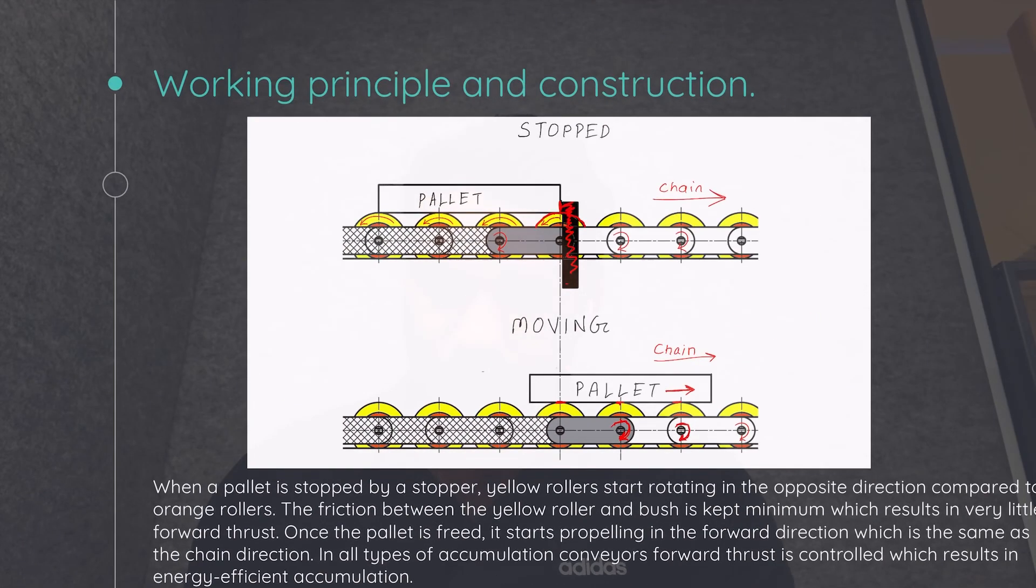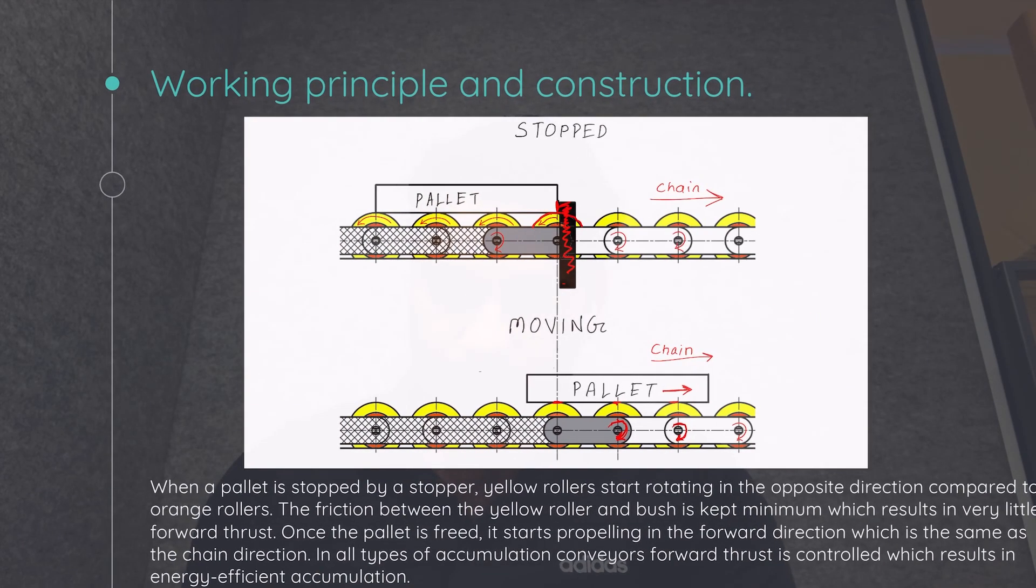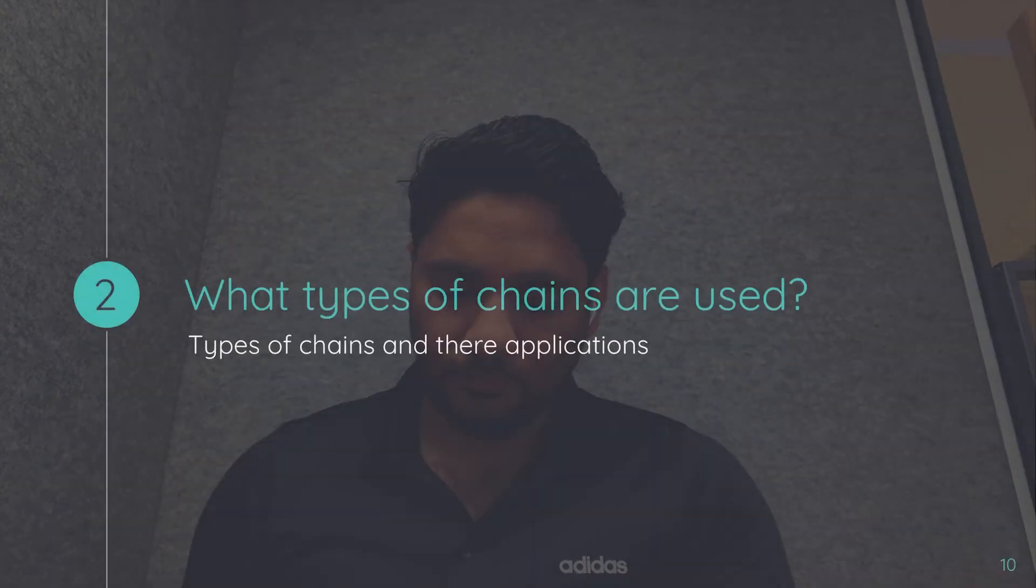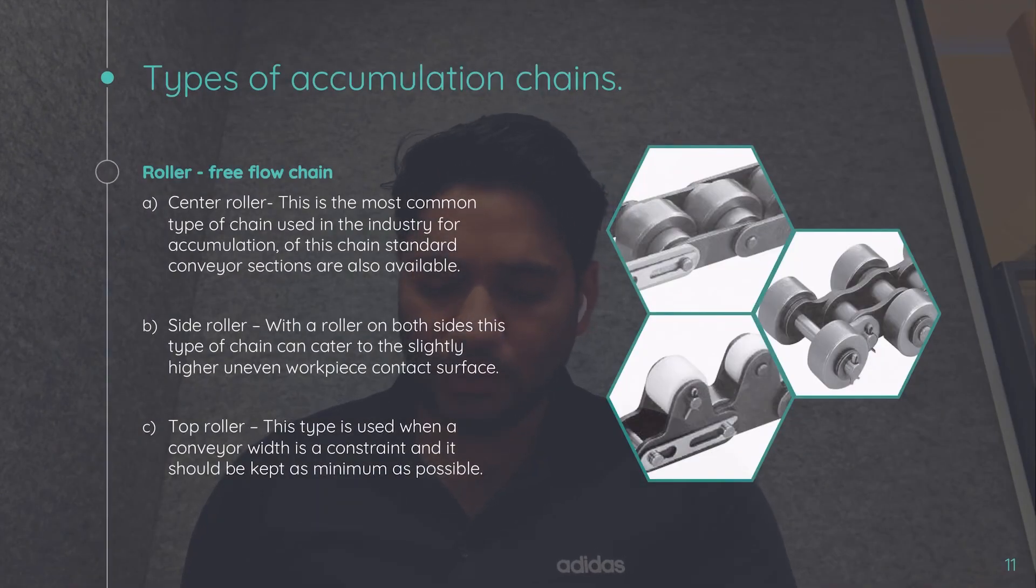What type of chains are used in this particular conveyor? There are center roller chains—as you can see, the roller is in the center. There are side roller chains—we have rollers on both sides. And there are top roller chains. They are used as per the requirement.